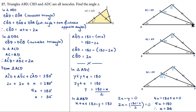From triangle ACD, the sum of interior angles gives us: angle ACD plus angle ADC plus angle CAD equals 180 degrees. That means 2X plus 2X plus X equals 180, so 5X equals 180, which gives X equals 36 degrees. That's the first method.